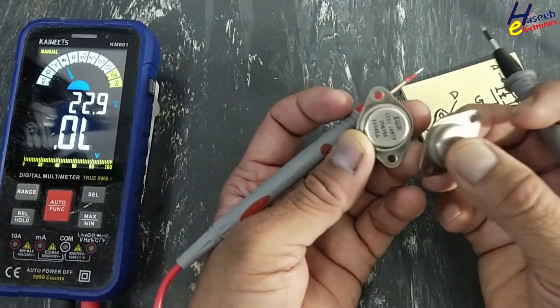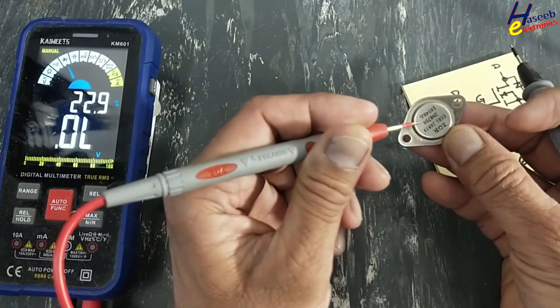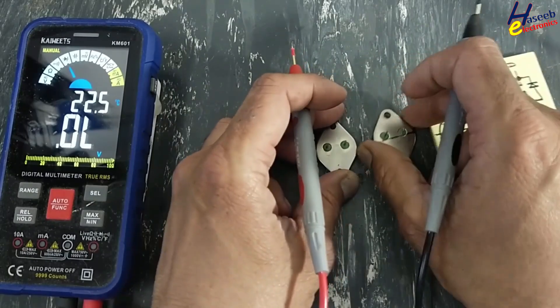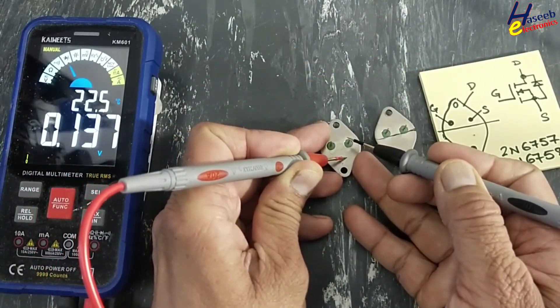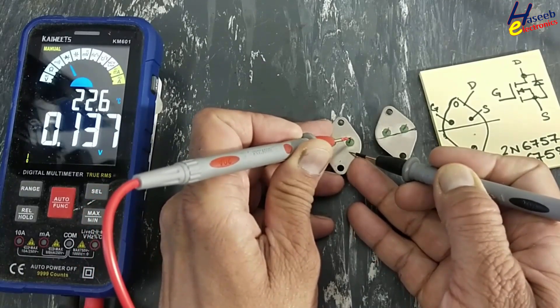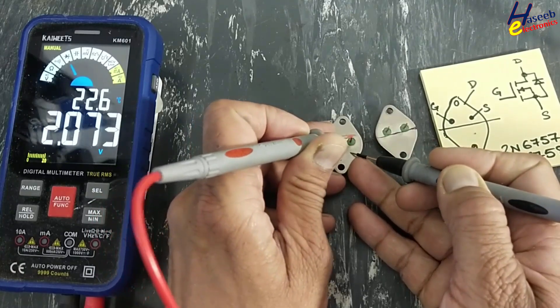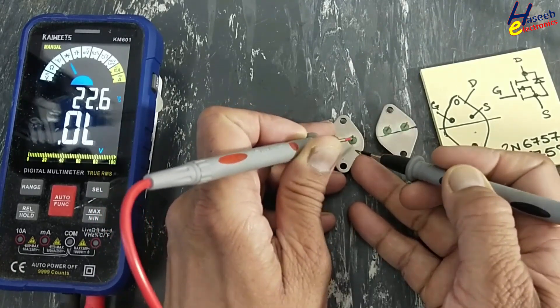Same way, the same component number 2N6758. Reading shows 0.137. This is short circuit between drain to source.